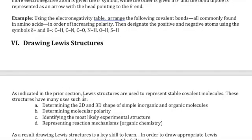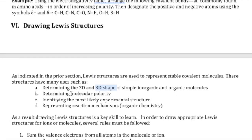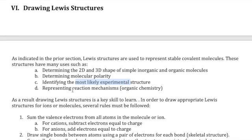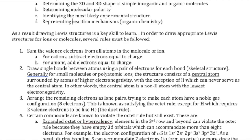Here is a brief overview of why we draw Lewis structures — the next video will show how to draw them. Lewis structures give us an easy tool to represent bonding in molecules in two-dimensional form. From that information, we can predict the three-dimensional shape of simple inorganic and organic molecules, determine molecular polarity (helping predict whether compounds will mix), and understand resonance. In organic chemistry, Lewis structures are commonly used to illustrate electron movement in reaction mechanisms.